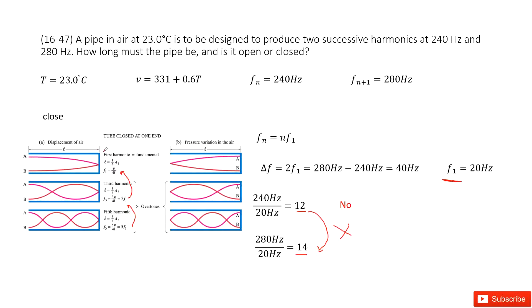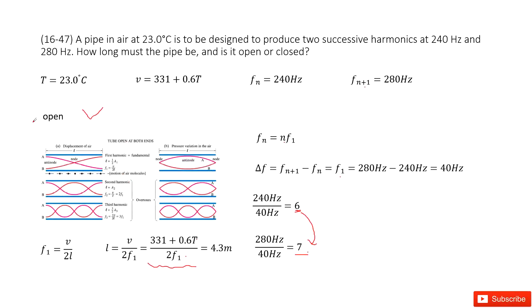Also, in a tube closed at one end, these numbers should be odd numbers. These are even numbers, so it doesn't work. Therefore, we can confirm this pipe is open, and we found f1 is 40 Hertz.